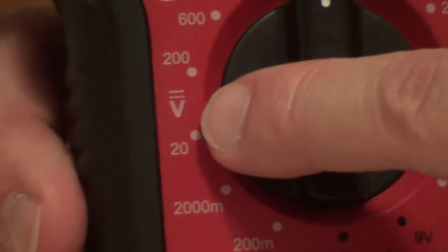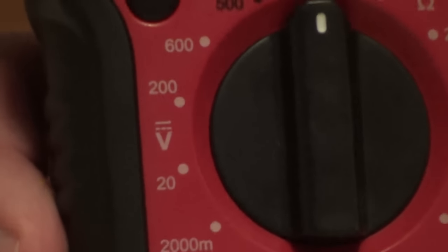The V with three dots over it and one single wavy line is for direct current, so if you're checking batteries.